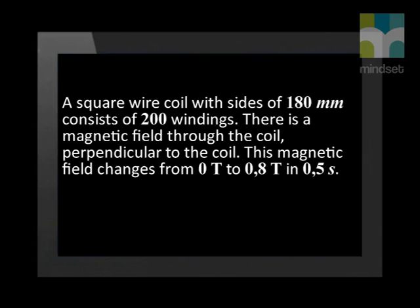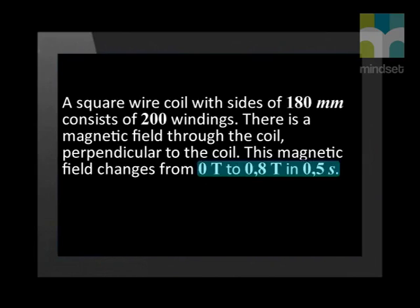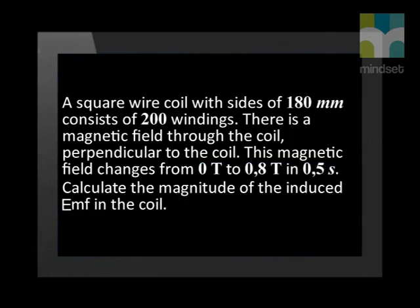Let's look at two examples where we apply this knowledge. Please have a paper, a pen, and a calculator with you if possible so that you can do the calculation with us. A square wire coil with size of 180 millimeters consists of 200 windings. There is a magnetic field through the coil, perpendicular to the coil. This magnetic field changes from 0 Tesla to 0.8 Tesla in 0.5 seconds. Calculate the magnitude of the induced EMF in the coil.